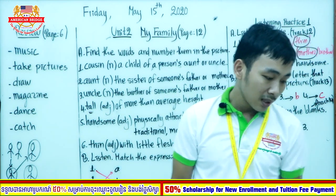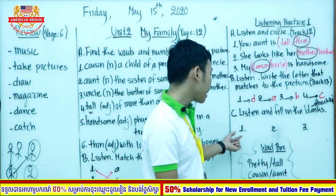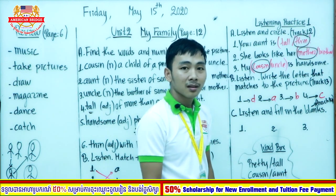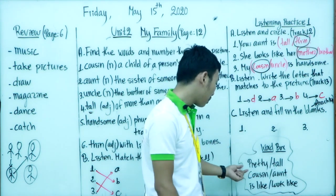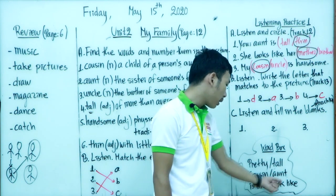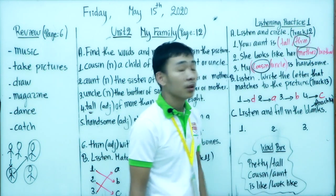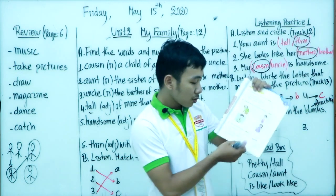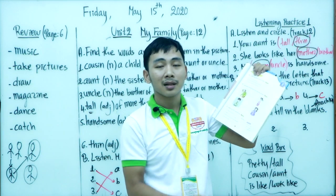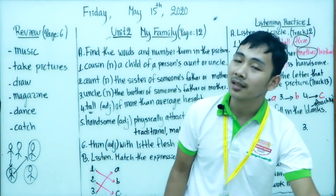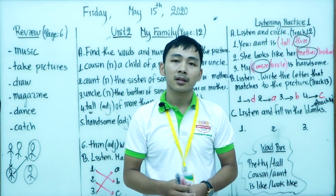Now let's move to Section C: listen and fill in the blanks — Track 14. There is a word box with options: pretty, tall, cousin, look like. Before listening, read the word box so you know which words to listen for. After reading, listen to the track and fill in the blanks with the correct word. Are you ready? Let's listen.